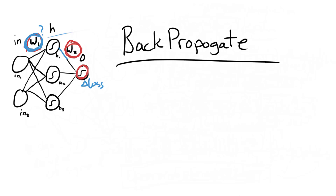We have delta loss, and we want to multiply that by each of the weights on the synapses going backwards. If a synapse has a high weight, we know that node contributed a lot to our overall loss, so we want that node to take more of the blame. We multiply it backwards through all of our layers, giving us a measure of how much error each node contributed.